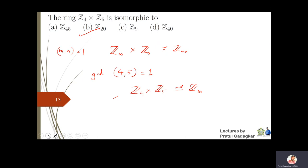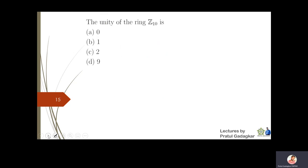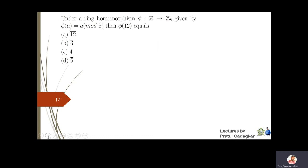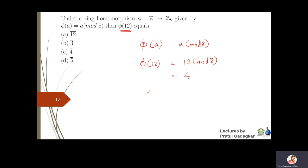The next problem: find the unity of the ring Z10. The unity is an element u such that a·u = a, so 1 serves as the unity of Z10. For the homomorphism phi from Z to Z8 given by phi(a) = a mod 8, we calculate phi(12) = 12 mod 8 = 4. So the answer is 4̄.